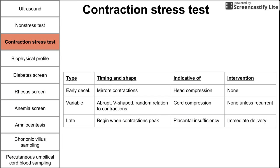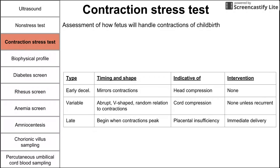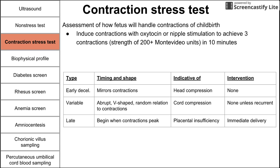In a contraction stress test, you want to induce contractions to see how baby reacts to them. This is an assessment of how the fetus will handle contractions of childbirth. Contractions can be induced in one of two ways: medically using oxytocin, or through nipple stimulation. The goal is to achieve three contractions within 10 minutes, measured using Montevideo units, and those contractions must be at least 200 Montevideo units in strength.